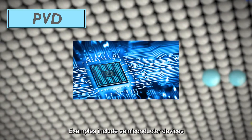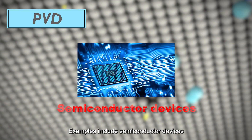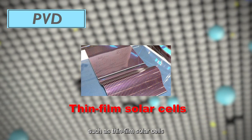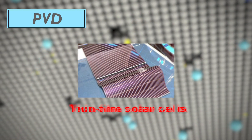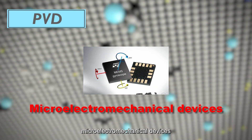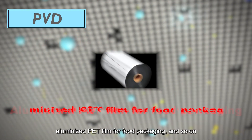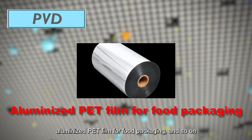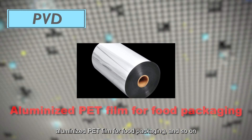Examples of PVD applications include semiconductor devices such as thin film solar cells, microelectromechanical devices, aluminized PET film for food packaging, and so on.